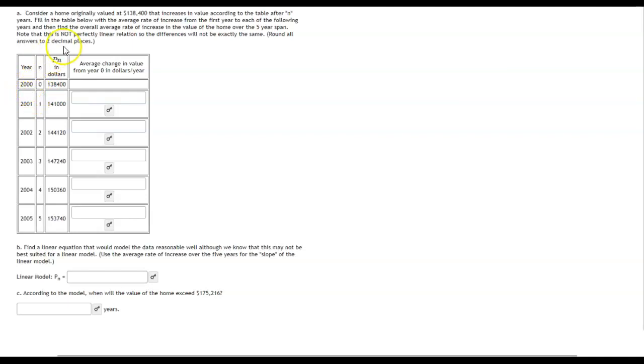It says let's fill in the table below with the average rate of increase from the first year to each of the following years, and then find the overall average rate of increase in the value of the home over the five year span.